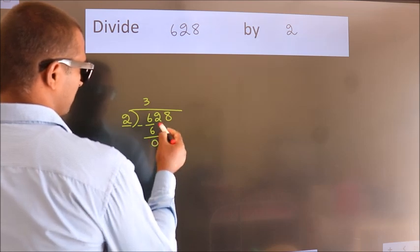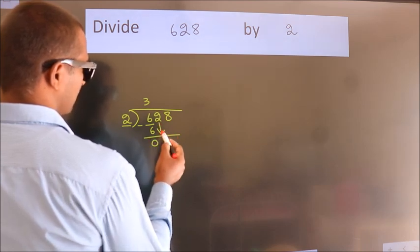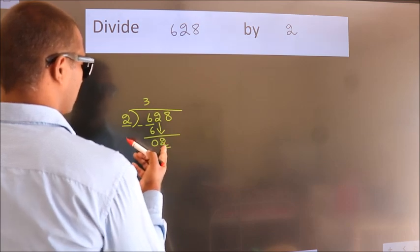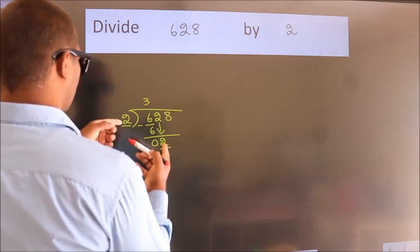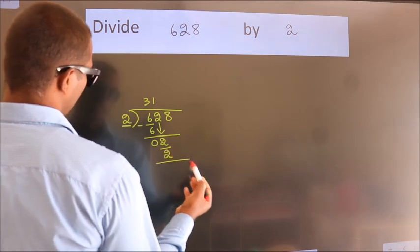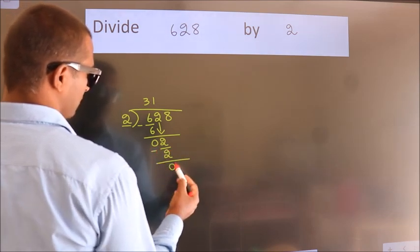After this, bring down the beside number. So 2 down. When do we get 2 in the 2 table? 2 ones, 2. Now we subtract. We get 0.